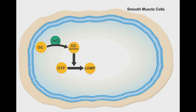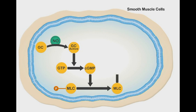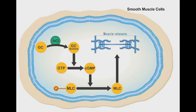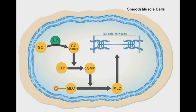Cyclic GMP facilitates the dephosphorylation of myosin light chains. This dephosphorylation process induces the dissociation of myosin and actin filaments and results in smooth muscle relaxation.